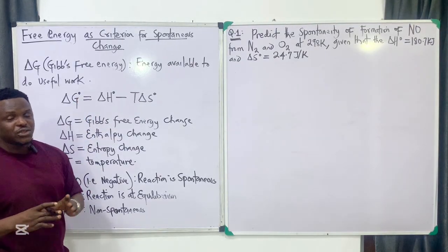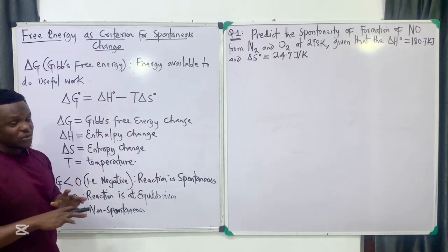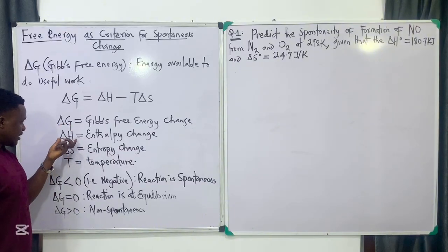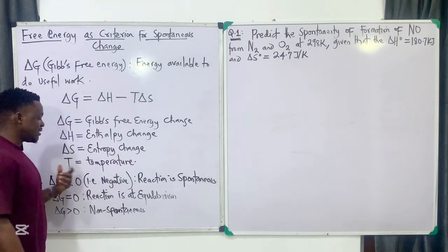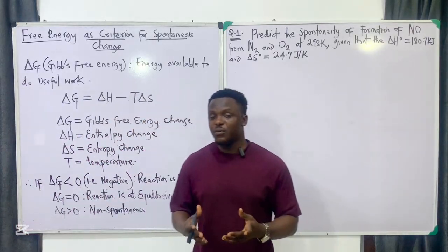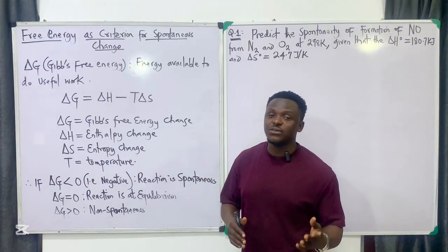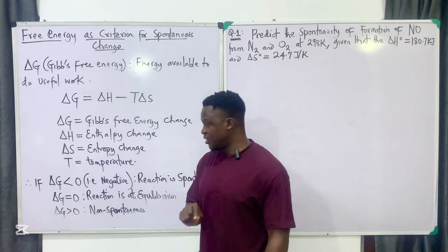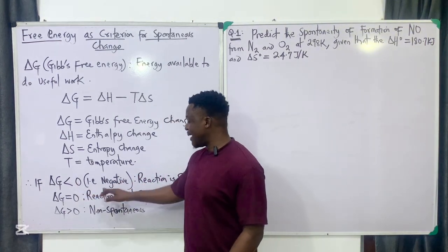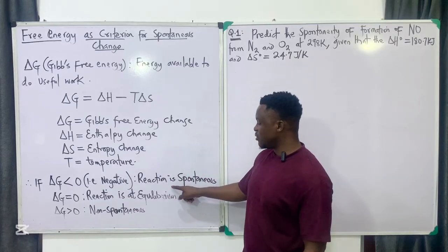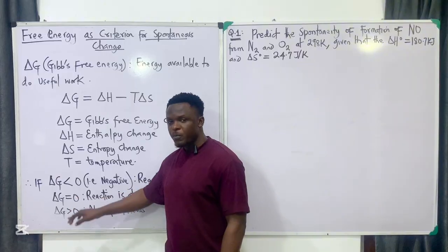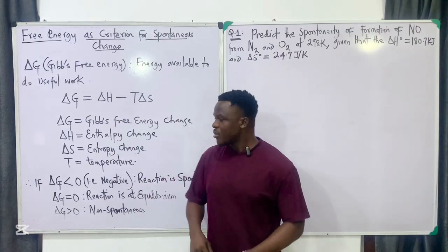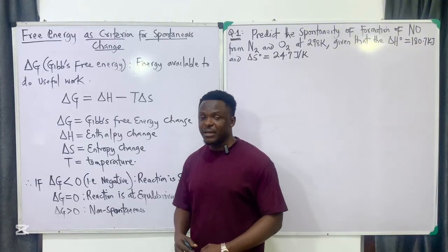If the condition is standard, a superscript dot is added. Standard temperature is 25°C. To predict spontaneity, you solve for ΔG: if ΔG is less than zero (negative), the reaction is spontaneous. If ΔG equals zero, the reaction is at equilibrium — neither spontaneous nor non-spontaneous. If ΔG is greater than zero (positive), the reaction is non-spontaneous.